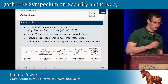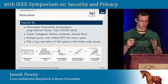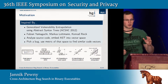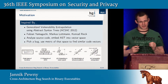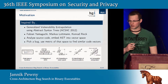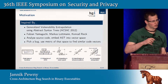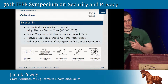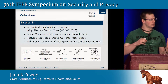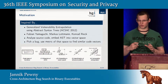I'll start with not our work, but somebody else's work, for two reasons: first, because it really inspired what we did; second, because I really like the overview graphic they have. I'm talking about generalized vulnerability extrapolation using abstract syntax trees, a work by Fabian Yamaguchi et al., who's also in this room. What they do is analyze source code, and the resulting abstract syntax tree is embedded into a vector space. They use the metric of that vector space to find similar code vectors, and if one happens to be a known bug, it's likely the others may also be buggy.